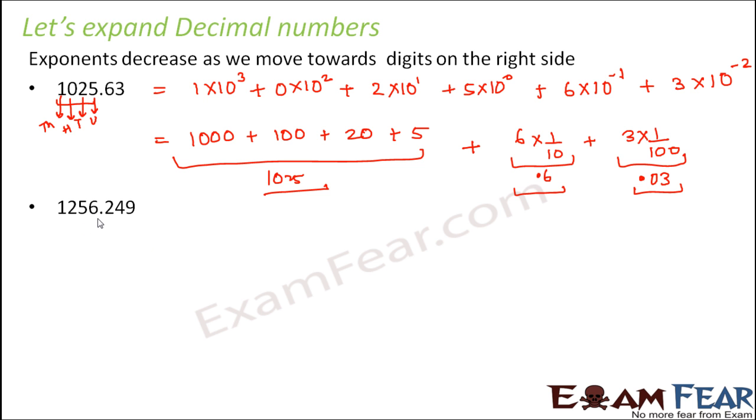It's 1256.249. This is units, tens, hundreds and thousands. So this can be expanded as 1×10³ + 2×10² + 5×10¹ + 6×10⁰ + 2×10⁻¹ + 4×10⁻² + 9×10⁻³.